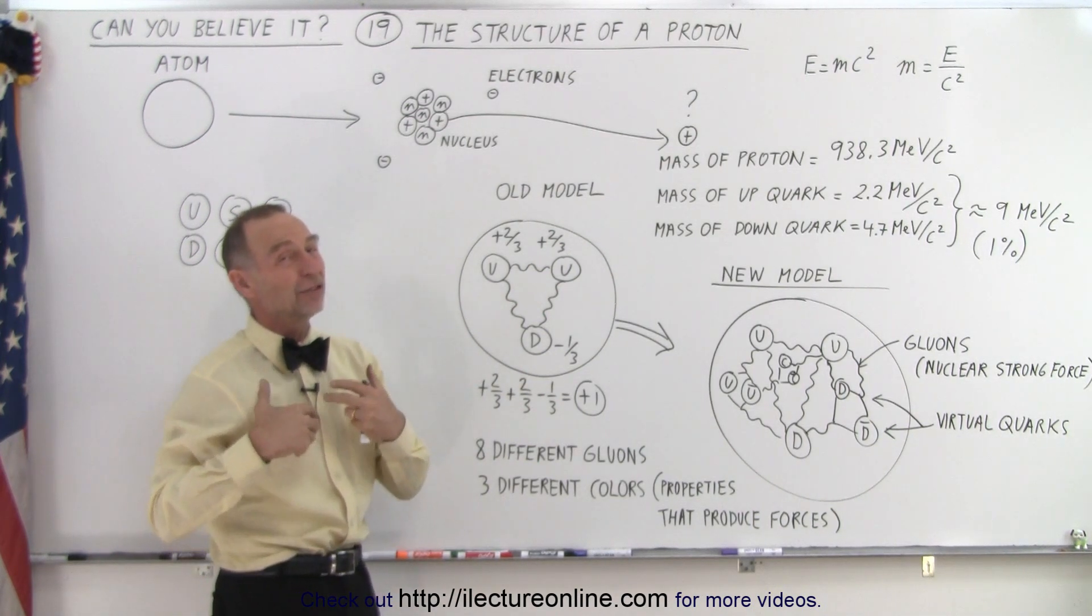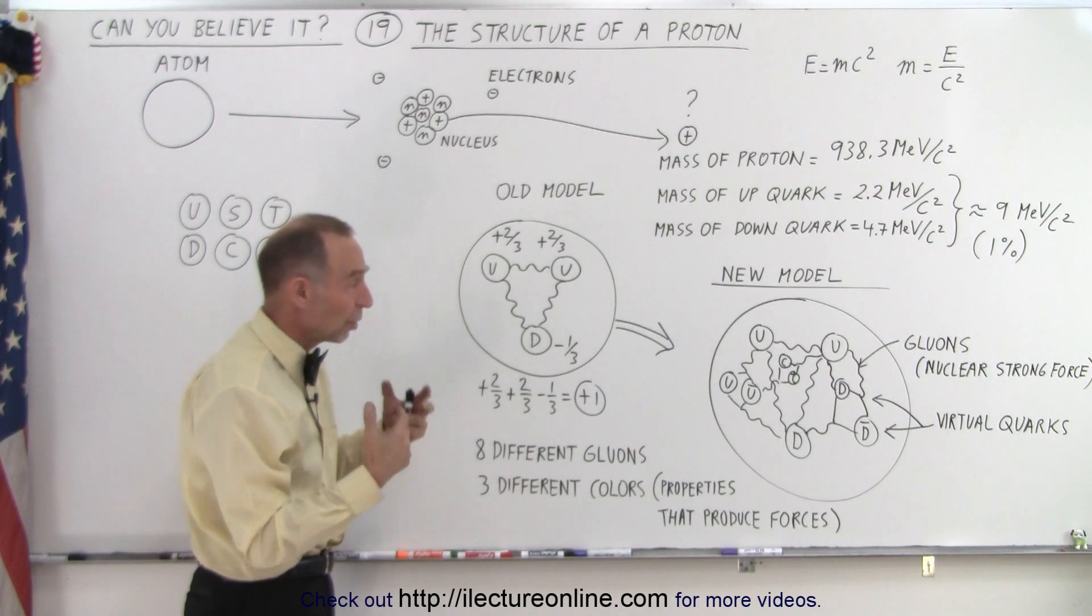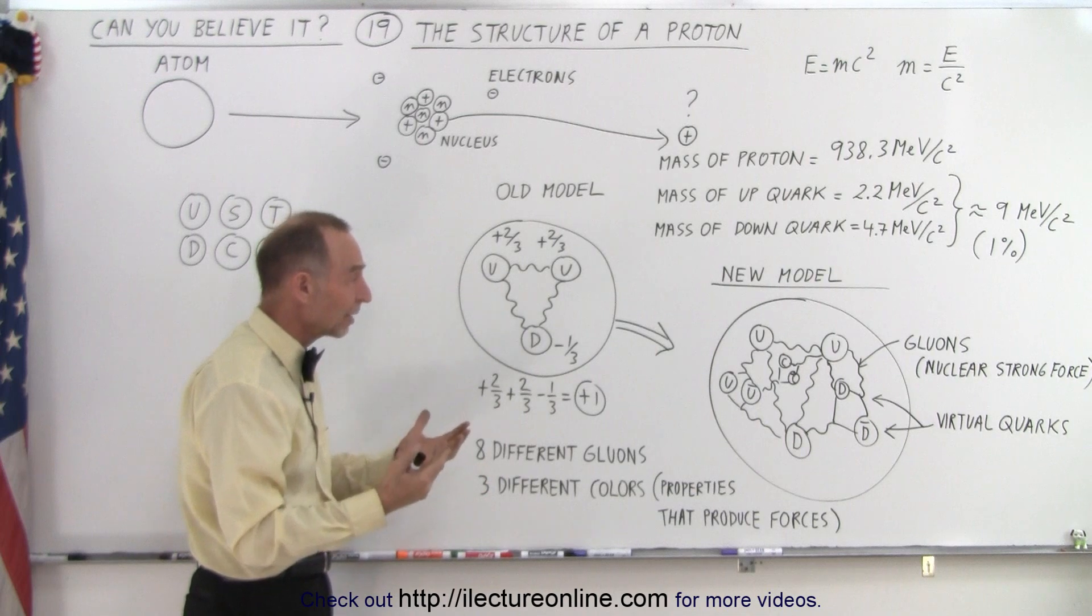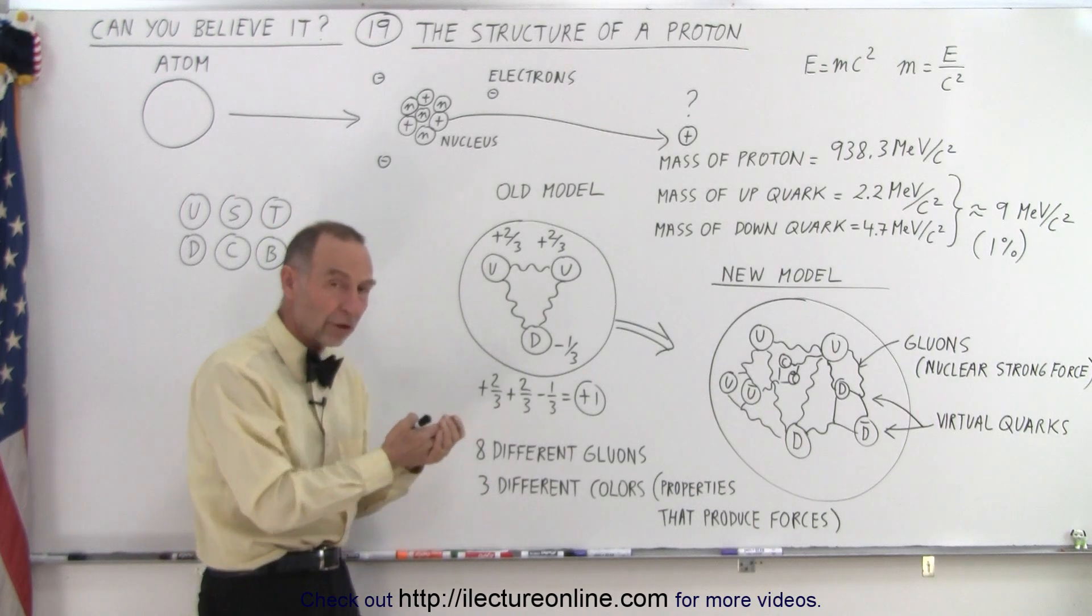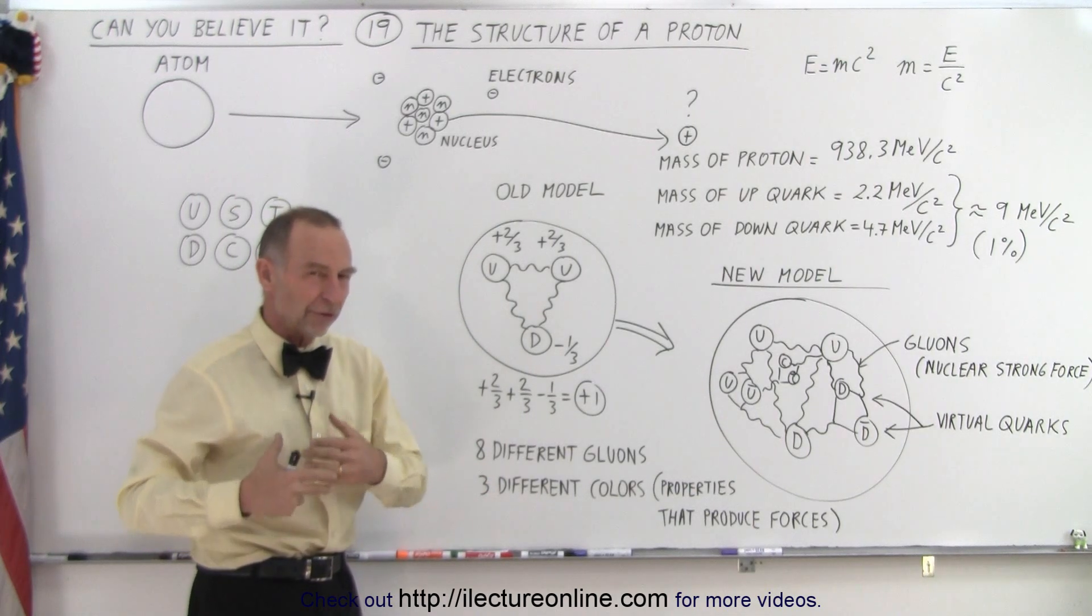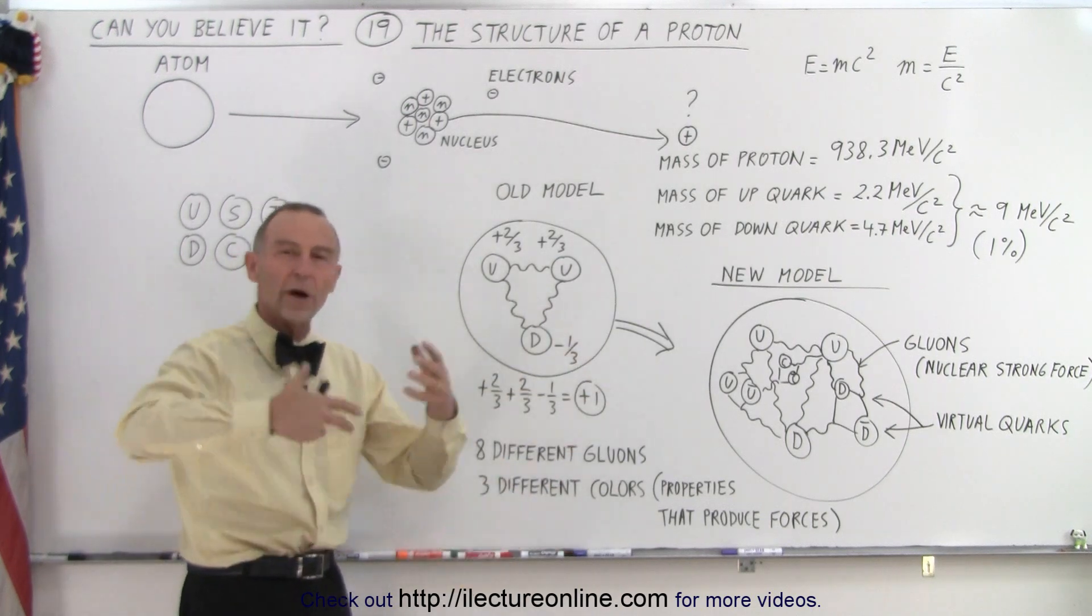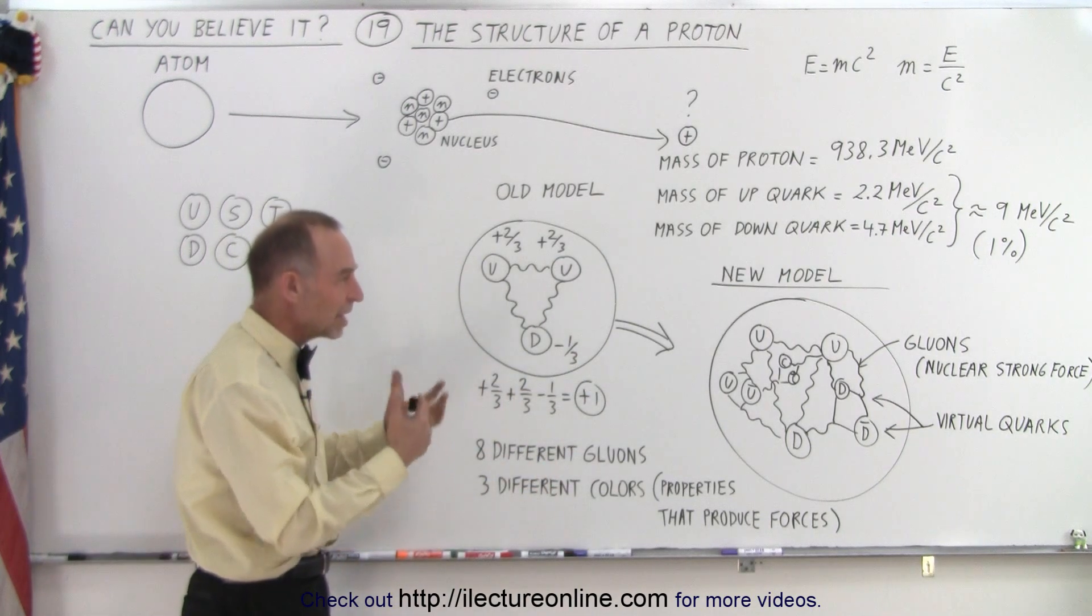But then with additional experimentation and really going to the limits of high pressure and temperature, we began to realize that when we subject protons and neutrons to very high temperatures and very high pressures, we would have this plasma of gluons and quarks coming out of the collisions.